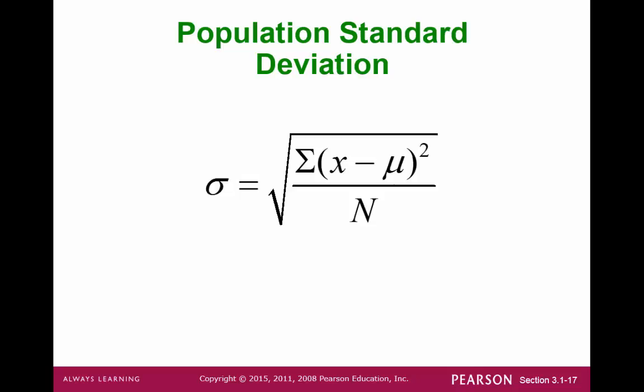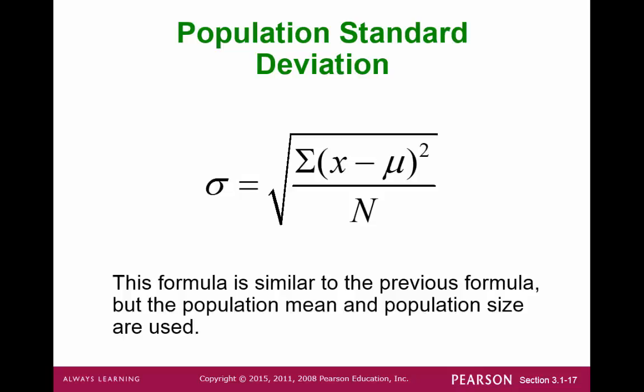Surprisingly, the population standard deviation has a glaring difference from the sample standard deviation. There is a clear difference in notation — s versus sigma, x-bar versus mu, and lowercase n versus capital N. But the most glaring difference is the denominator: what used to be n minus 1 is now simply n.